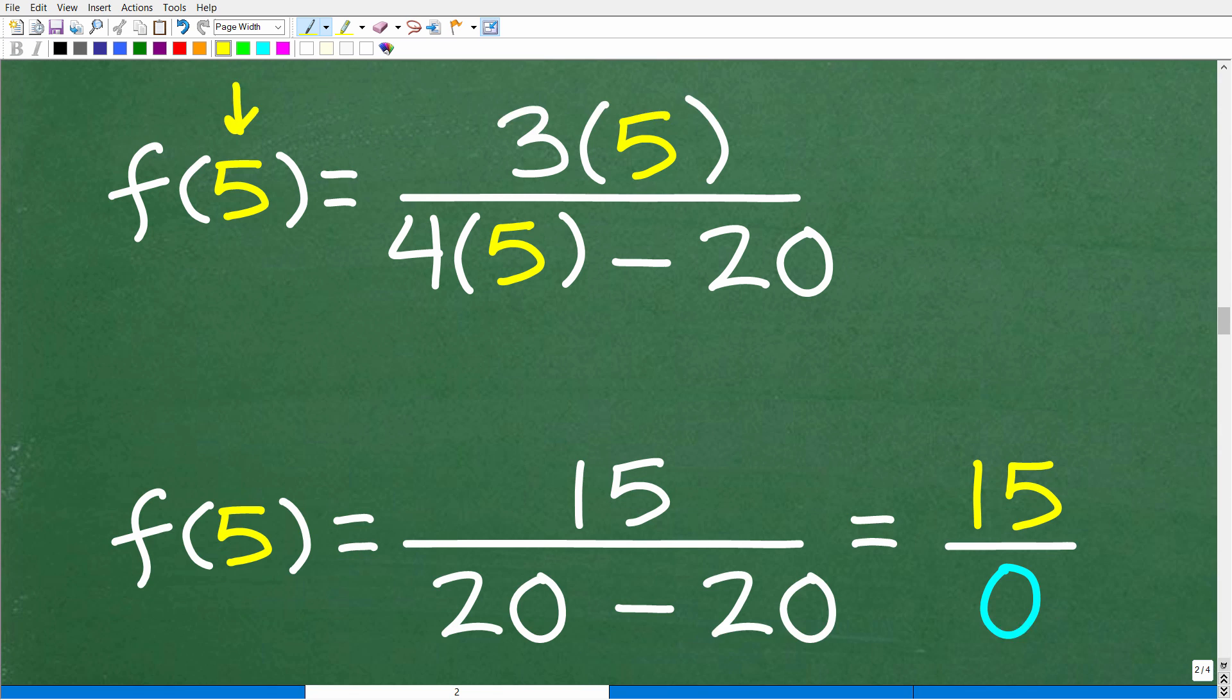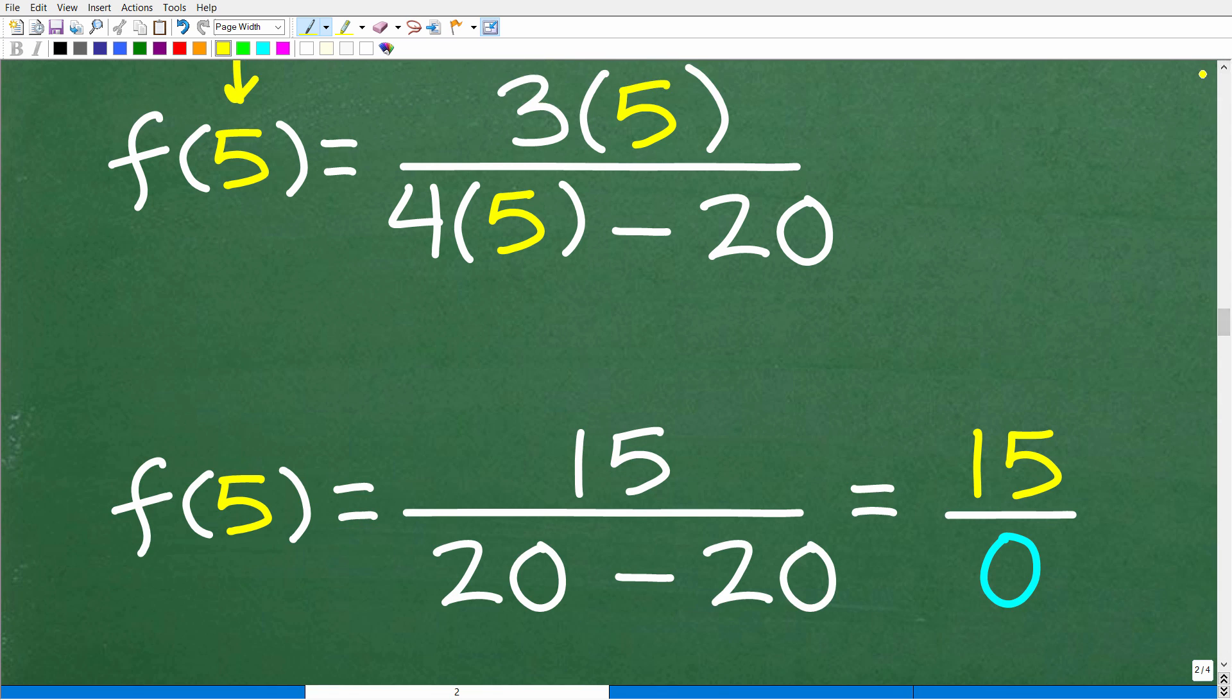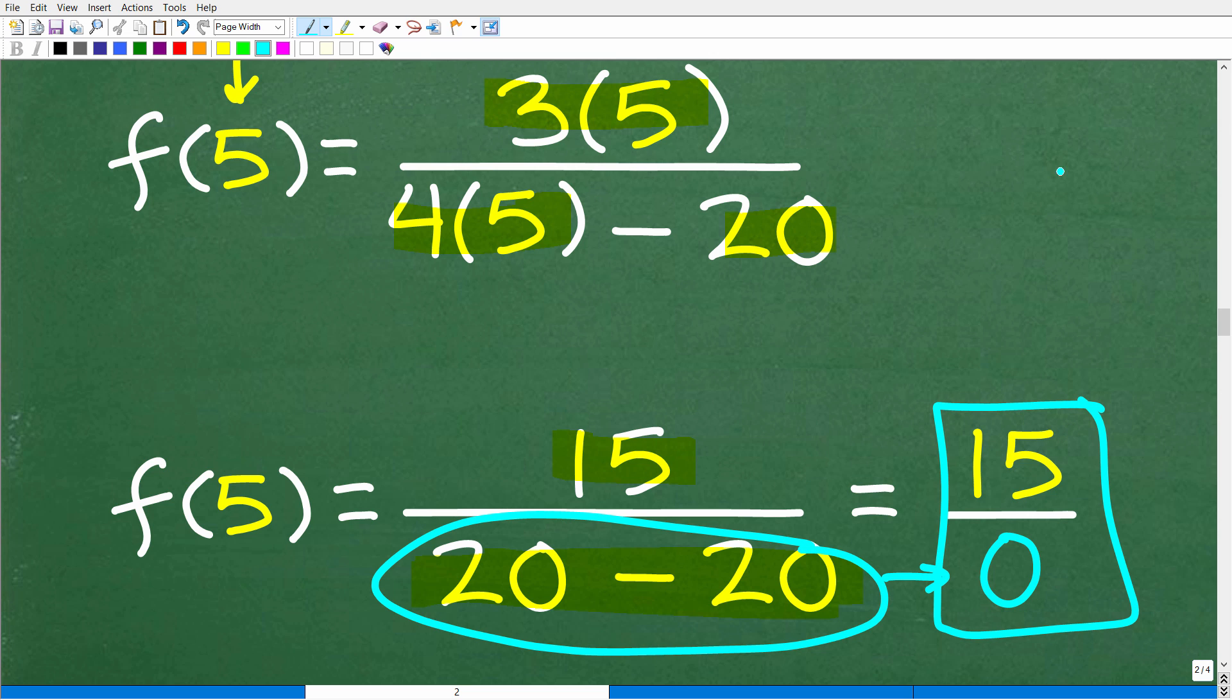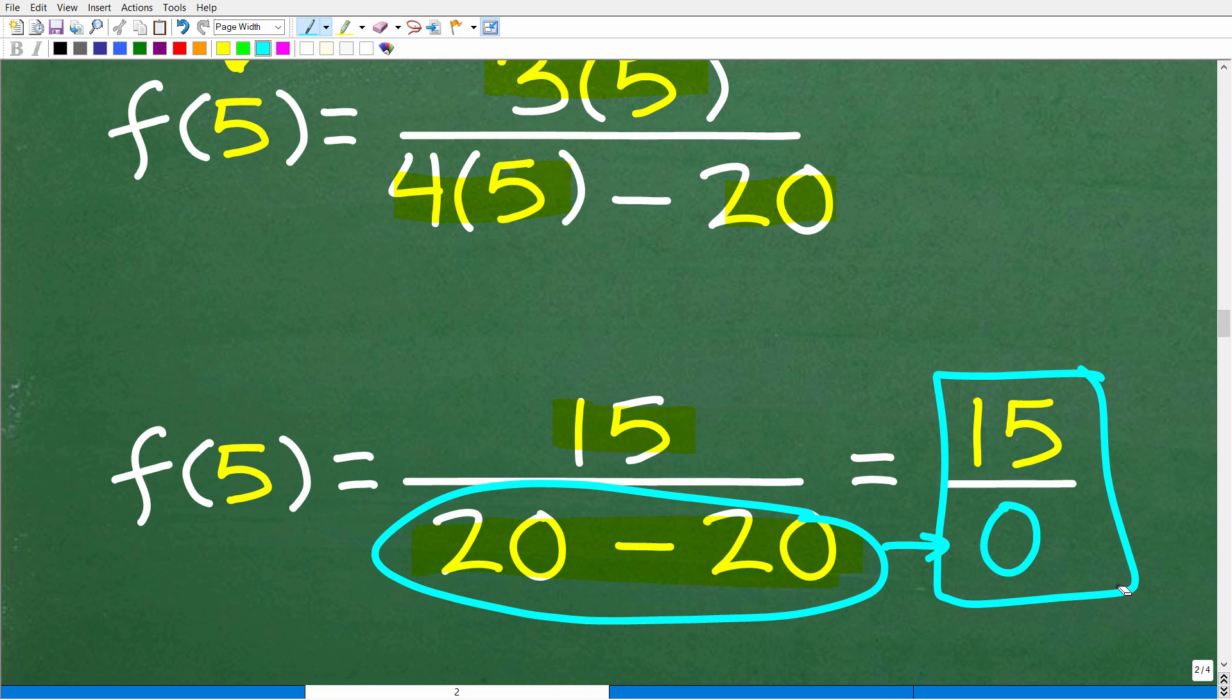So, when we do this math, what happens? Well, we're going to end up with 15 over 4 times 5, of course, is 20 minus 20. So, we have a problem here in the denominator because 20 minus 20 is 0. And this is a situation that you can never have in mathematics. You cannot divide by 0.